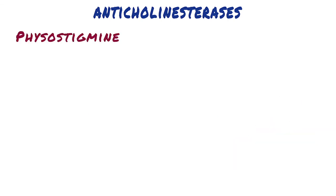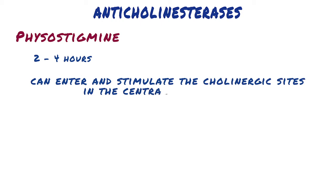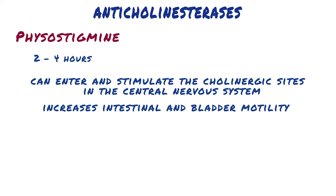Physostigmine has a wide range of effects as a result of its action and stimulates not only the muscarinic and nicotinic sites of the autonomic nervous system, but also the nicotinic receptors of the neuromuscular junction. Its duration of action is about 2 to 4 hours, and it is considered to be an intermediate acting agent. Physostigmine can enter and stimulate the cholinergic sites in the central nervous system. The drug increases intestinal and bladder motility, which serve as its therapeutic action in atony of either organ. Placed topically in the eye, it produces miosis and spasm of accommodation, as well as a lowering of intraocular pressure.